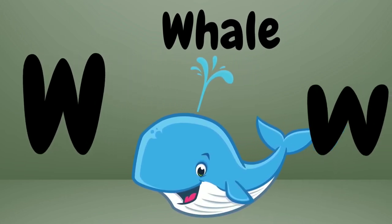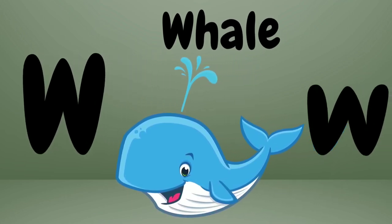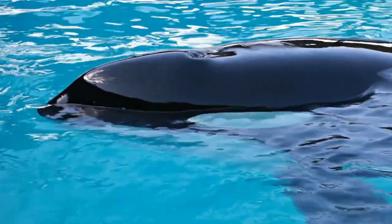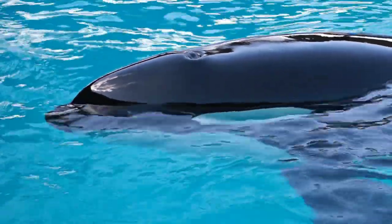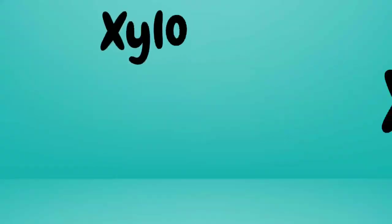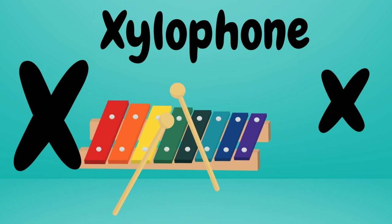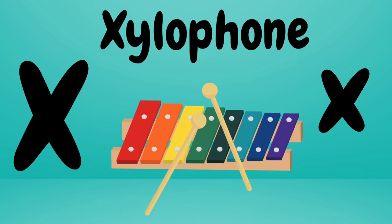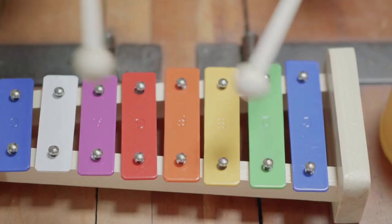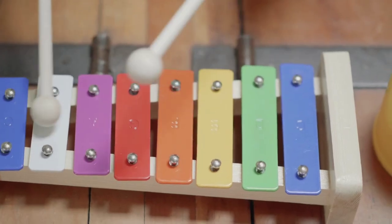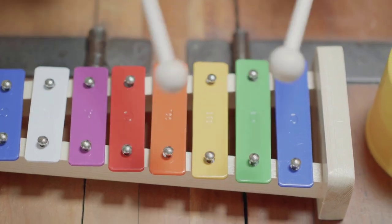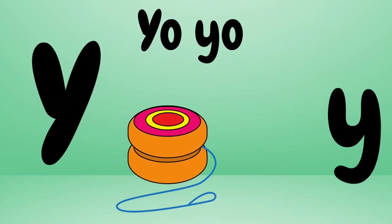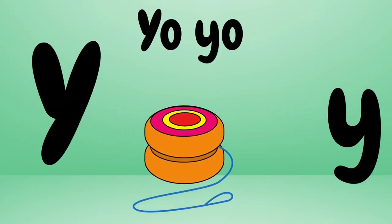W is for Whale. Whale. Whale. This is a Whale. Whale. X is for xylophone. Xylophone. Xylophone. This is a xylophone. Xylophone.